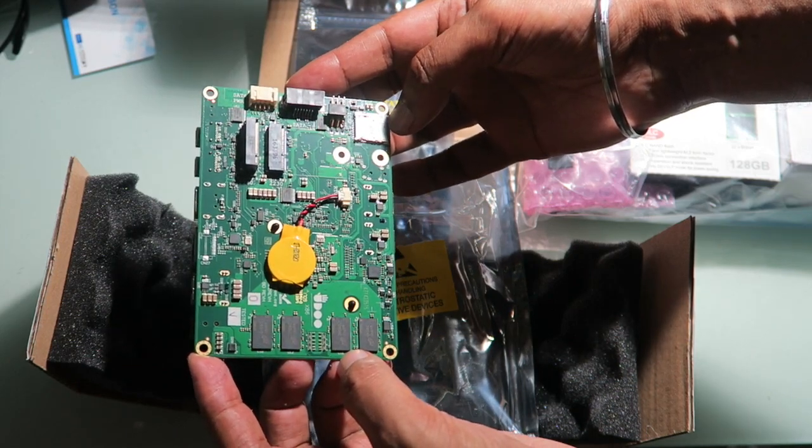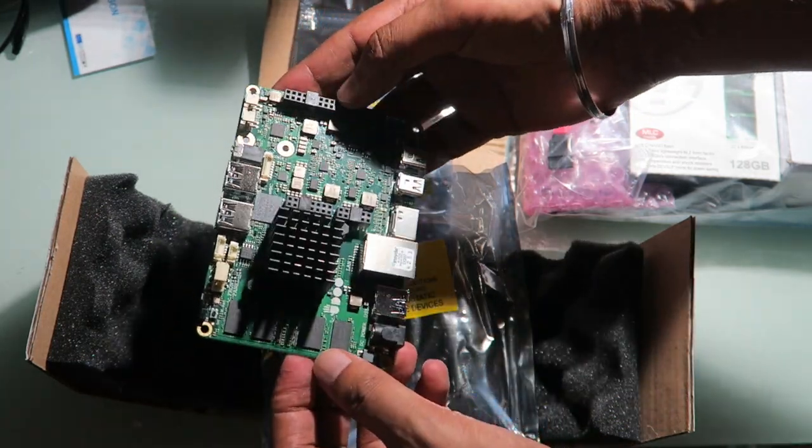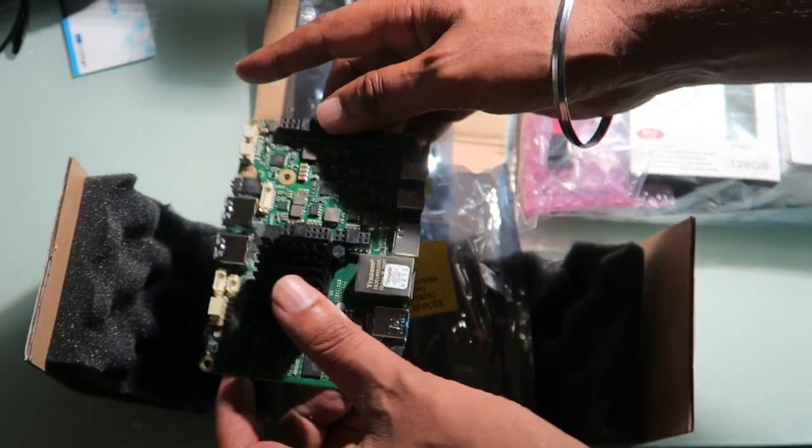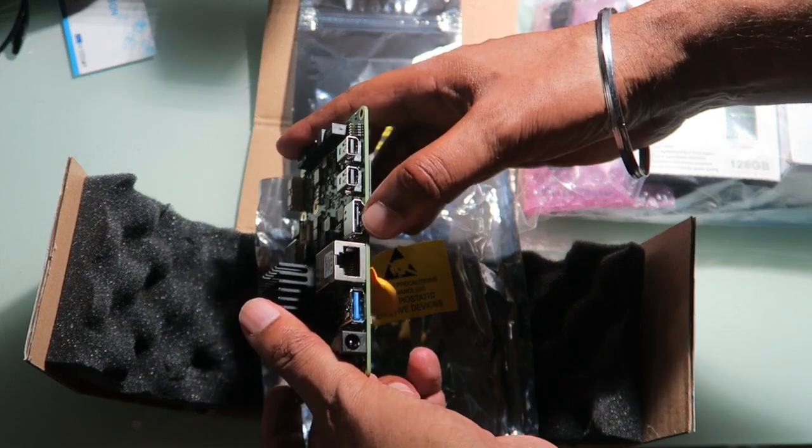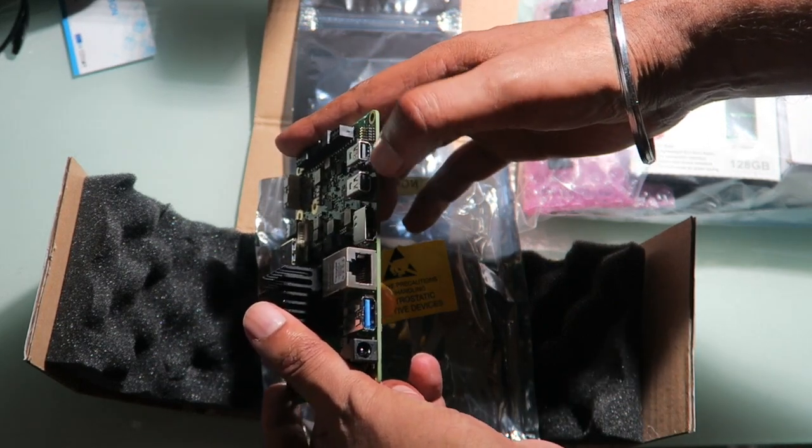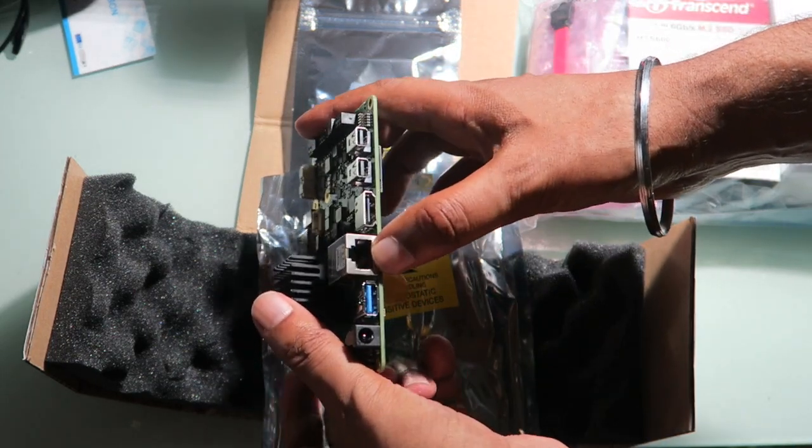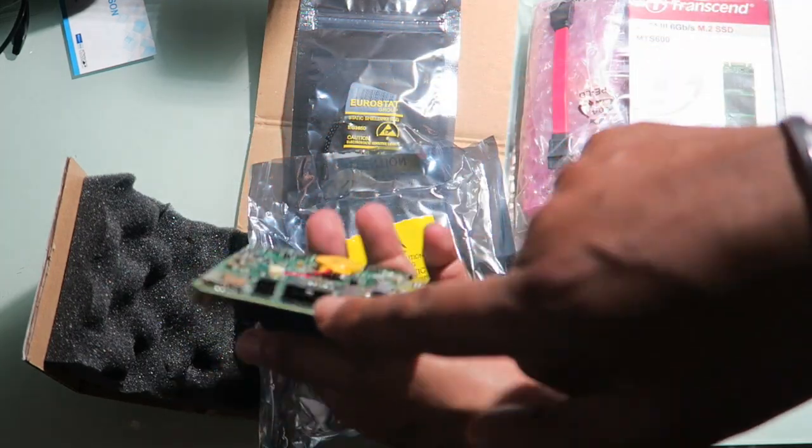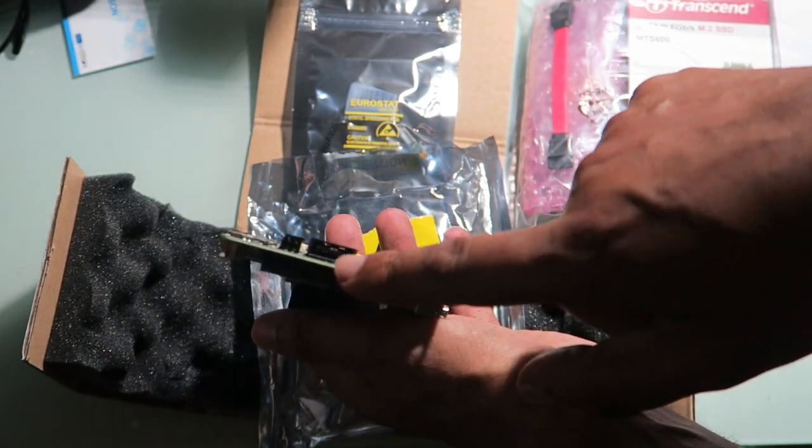When we turn it over, obviously that's the CPU and you got the standard ports. You get the USB ports on this end, HDMI here, and I think this is also mini HDMI, another USB port, Ethernet, some expansion ports.